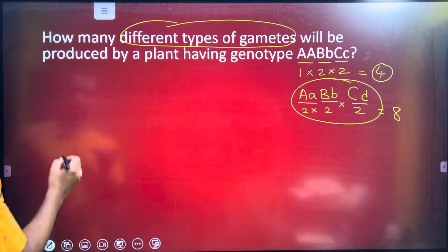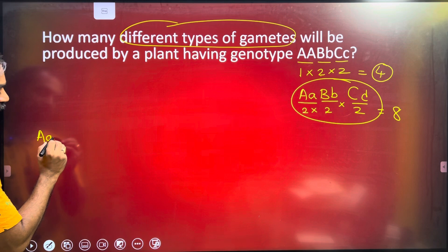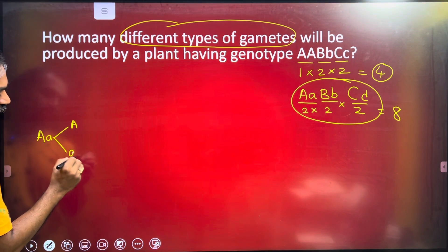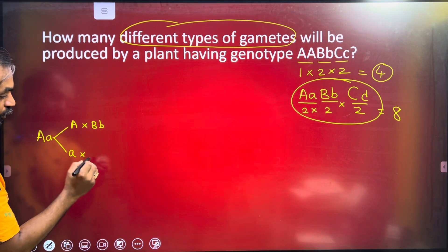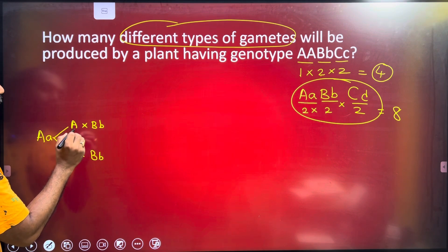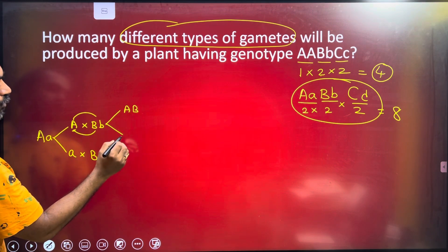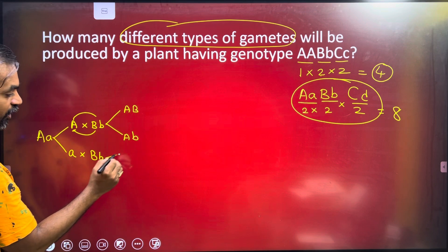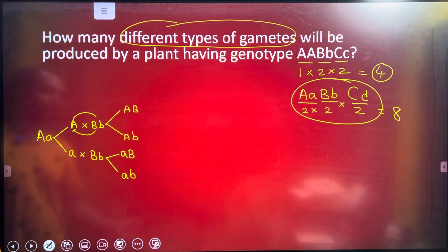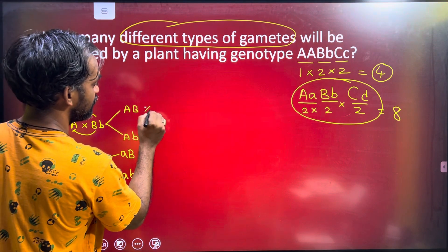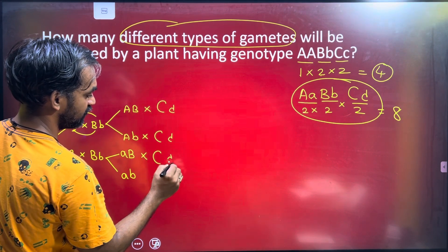Now let me explain how 8 types of gametes are formed. First, we take capital A, small a — the first pair. In this, how many types of letters are there? 2 types of letters: capital A and small a.